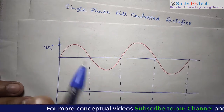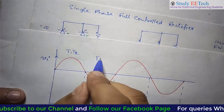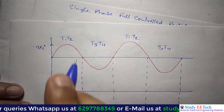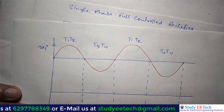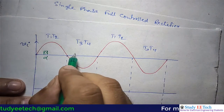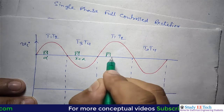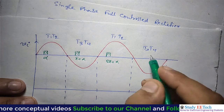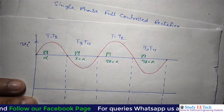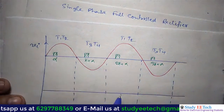Similarly, applying the same logic, in the negative half cycle T3 and T4 will conduct. Now, when this thyristor will be on is in our hand. Let us say we are triggering the device at some angle alpha, and we are triggering T3 and T4 at some angle pi plus alpha. Again here 2pi plus alpha, T1 and T2 are triggered at 2pi plus alpha. And T3, T4 are triggered at 3pi plus alpha.